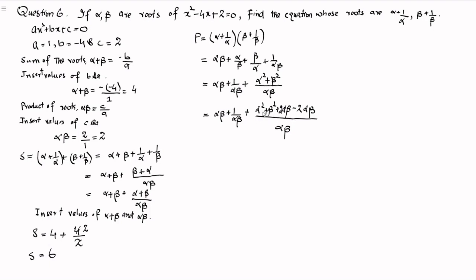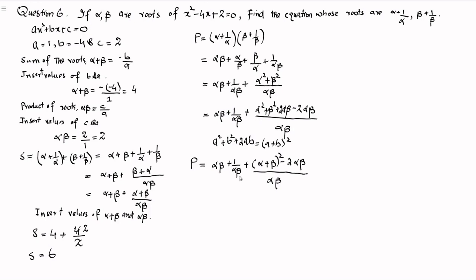So we manipulate alpha squared plus beta squared by completing the square. We add and subtract 2 alpha beta to get the identity a squared plus b squared plus 2ab equals (a plus b) whole squared. Therefore the product P can be written as alpha beta plus 1 over alpha beta plus (alpha plus beta) whole squared minus 2 alpha beta, all divided by alpha beta. Now we have the values of alpha beta and alpha plus beta to insert.